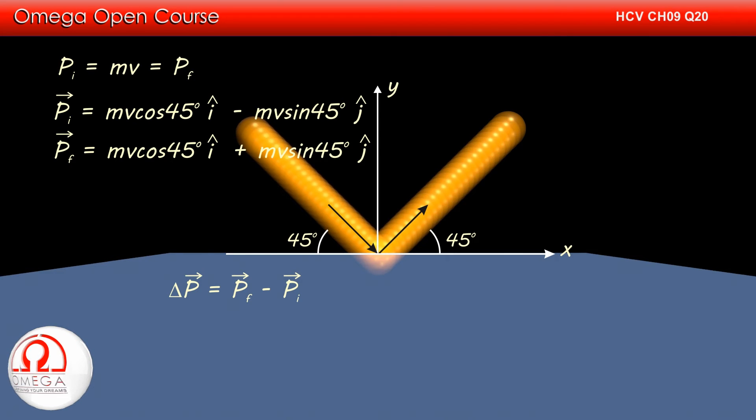The change in momentum is given by final momentum minus initial momentum. Therefore change in momentum vector is final momentum vector minus initial momentum vector. Subtracting the two vectors, we get 2 MV sin 45 degrees j cap. Putting the value of sin 45 degrees, we get the change in momentum vector is equal to root 2 MV j cap.